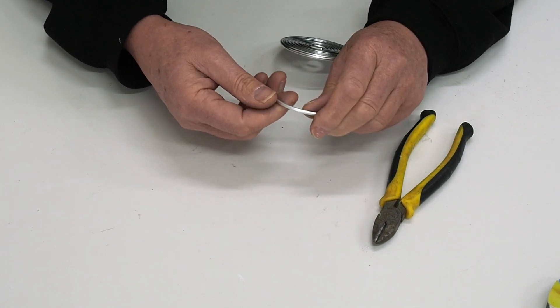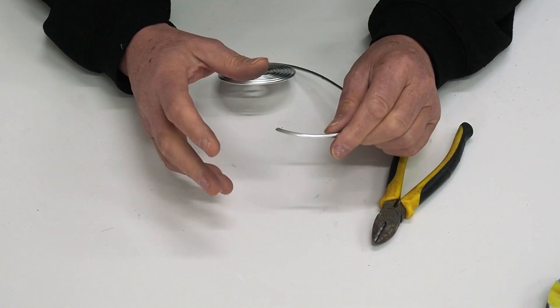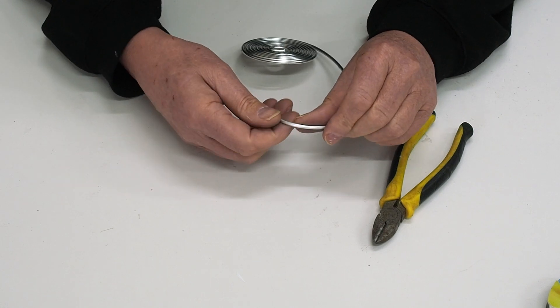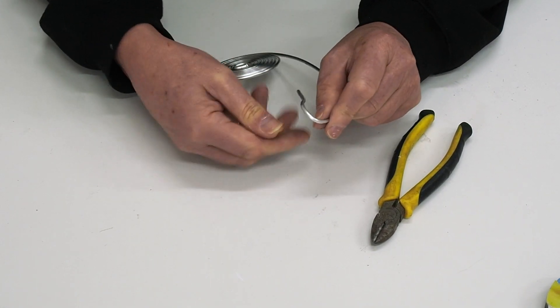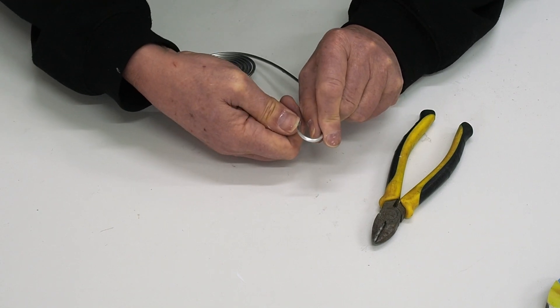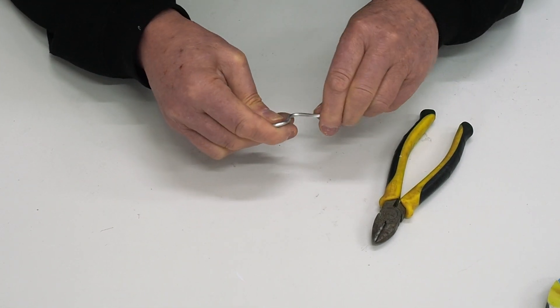What I generally do is just roll it out and kind of think about the size I'm going to be doing. So I put a bend in it like that.